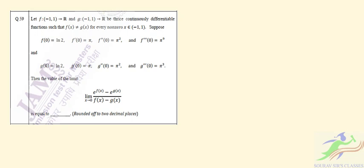This is question number 59 from the 2022 paper. Let f and g be functions on the open interval (-1,1) into the real space, thrice continuously differentiable, such that f(x) is not equal to g(x) for every non-zero x in (-1,1). We are given f(0), f'(0), f''(0), f'''(0) and similarly g(0), g'(0), g''(0), g'''(0). We have to find the limit of a particular expression.